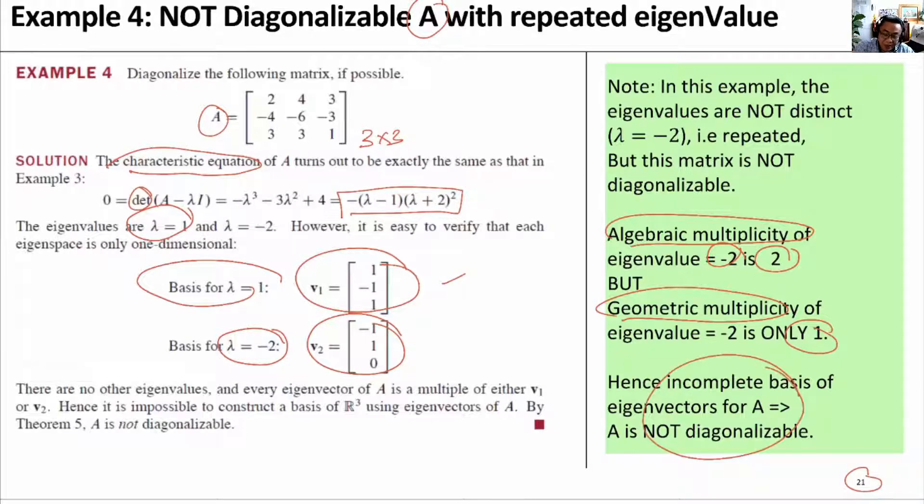Hence, we cannot find a complete basis. That is, we cannot form P equals V1 and V2. There is no V3. There is no independent eigenvector that can be found.